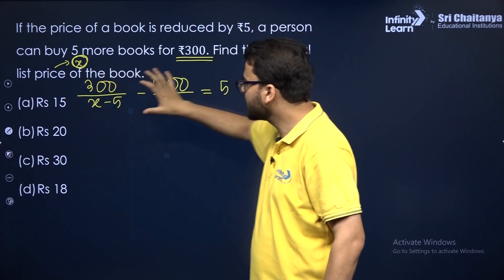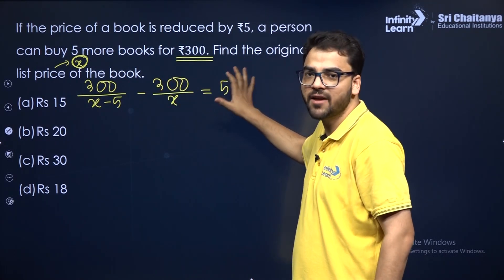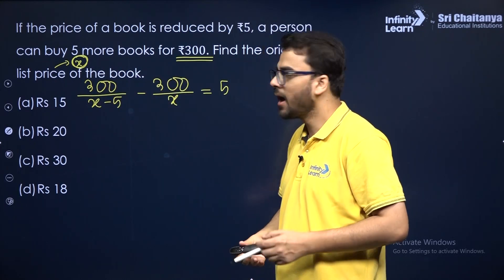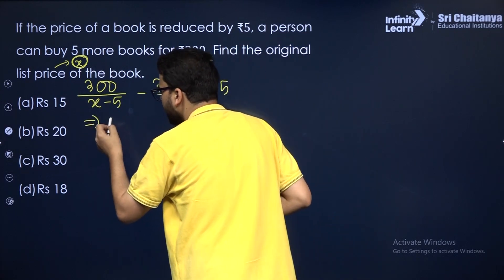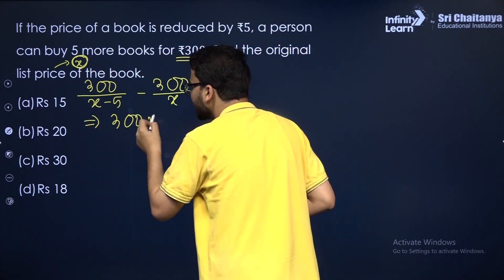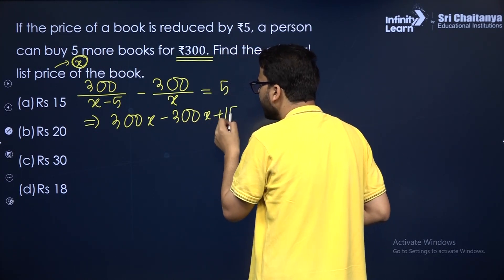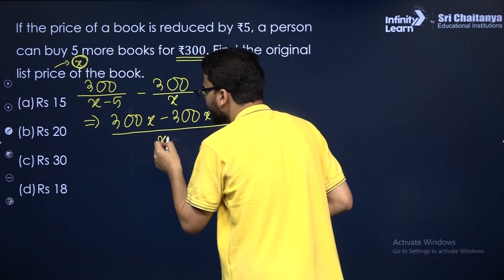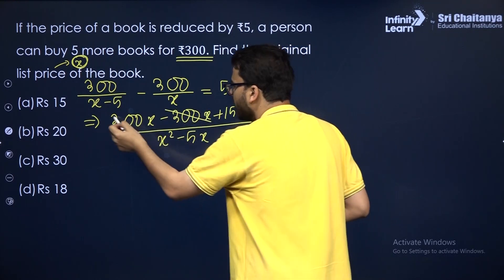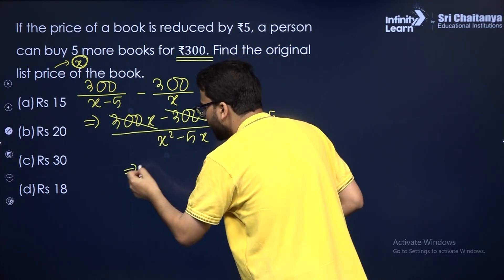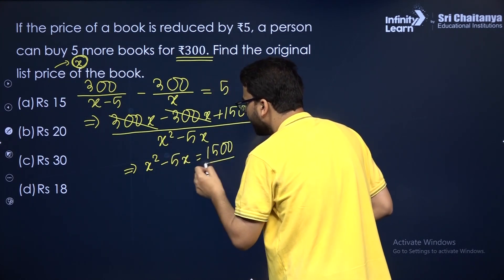So the equation is: 300/(X − 5) − 300/X = 5. Simplifying: 300X − 300(X − 5) = 5 · X(X − 5), giving 1500 = 5X(X − 5). Cross multiplying and simplifying: X² − 5X = 300.